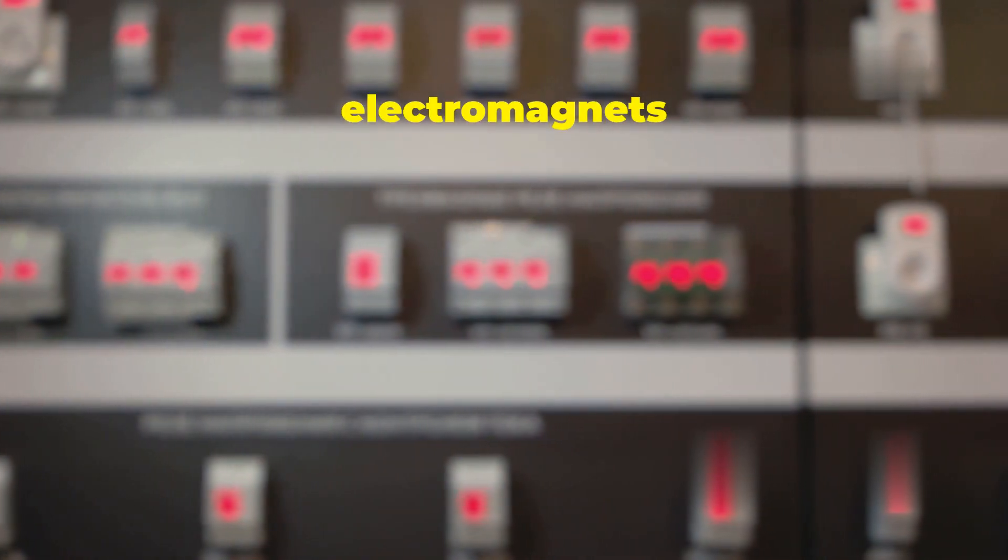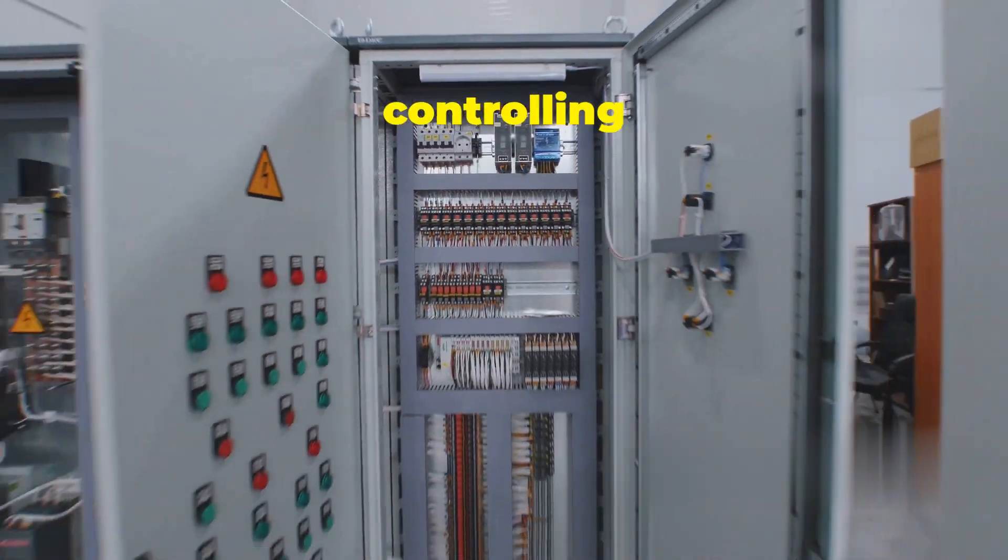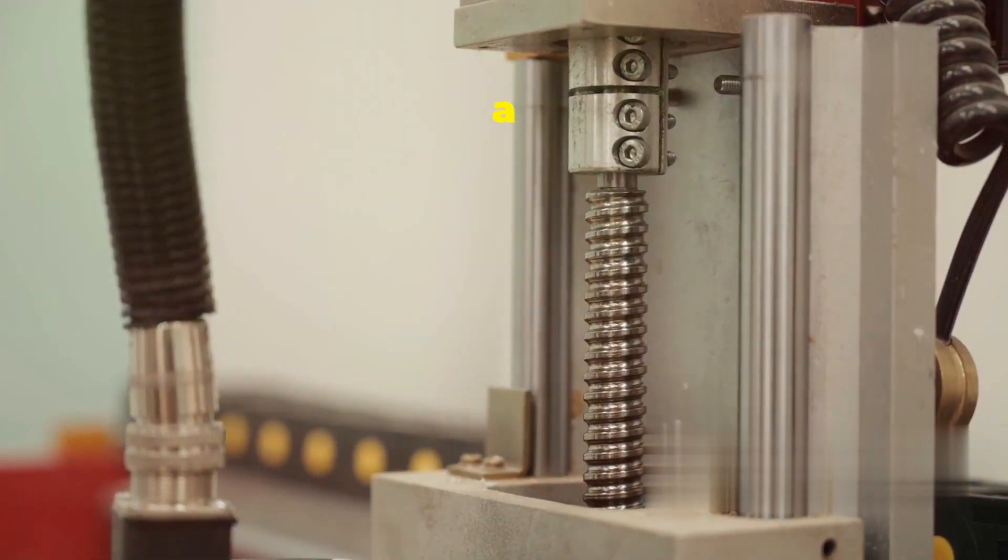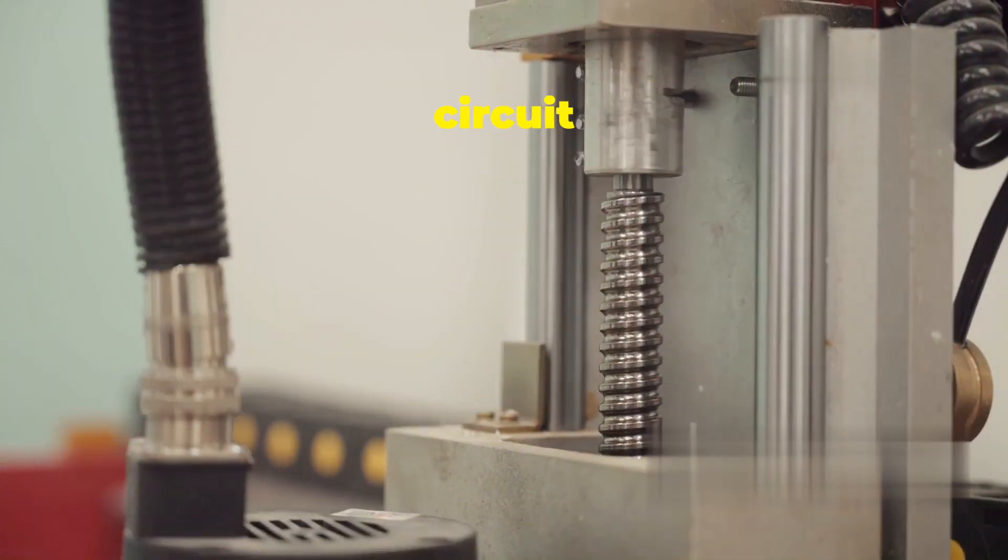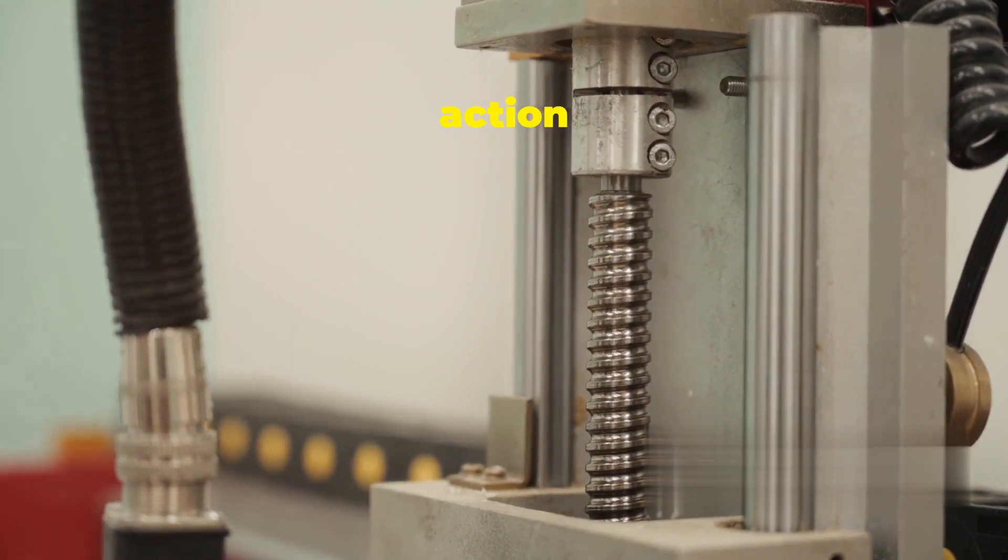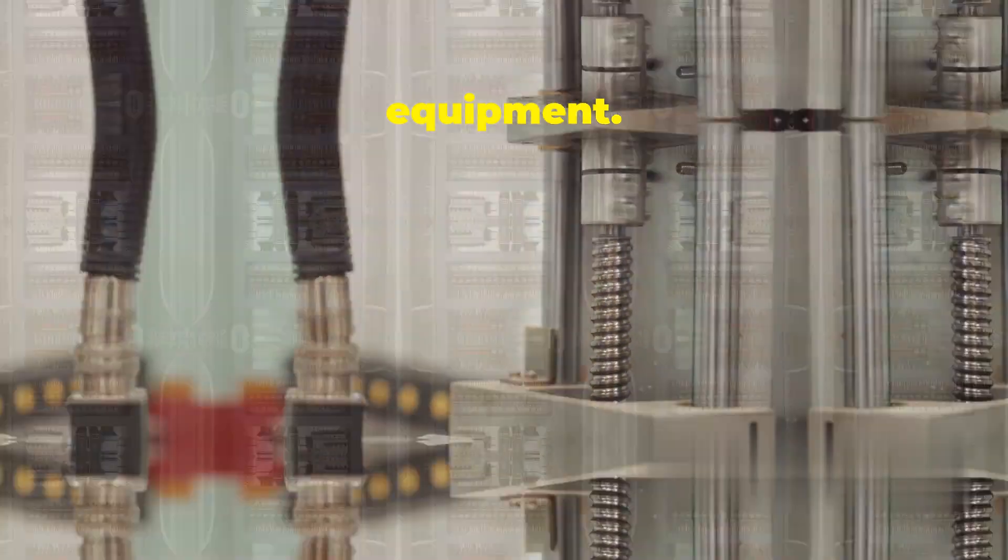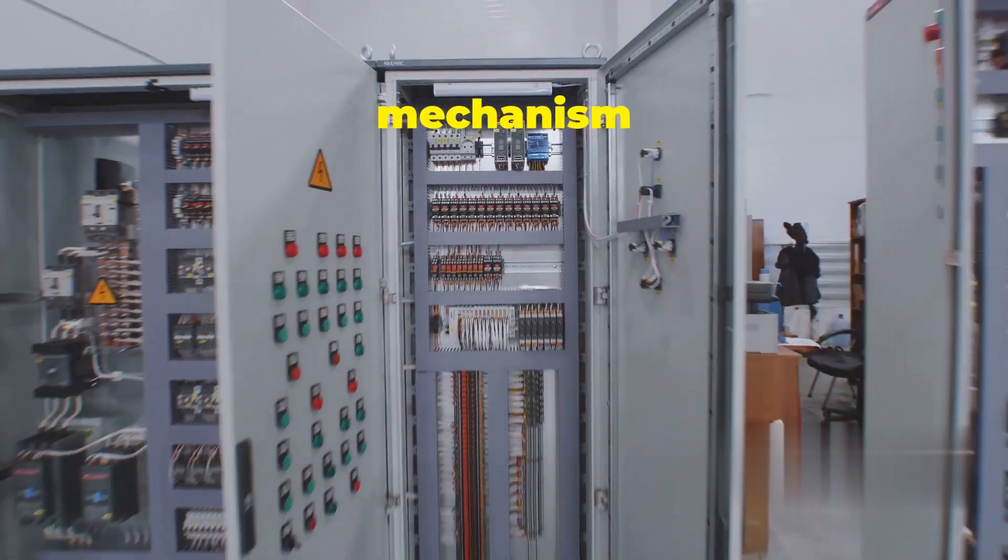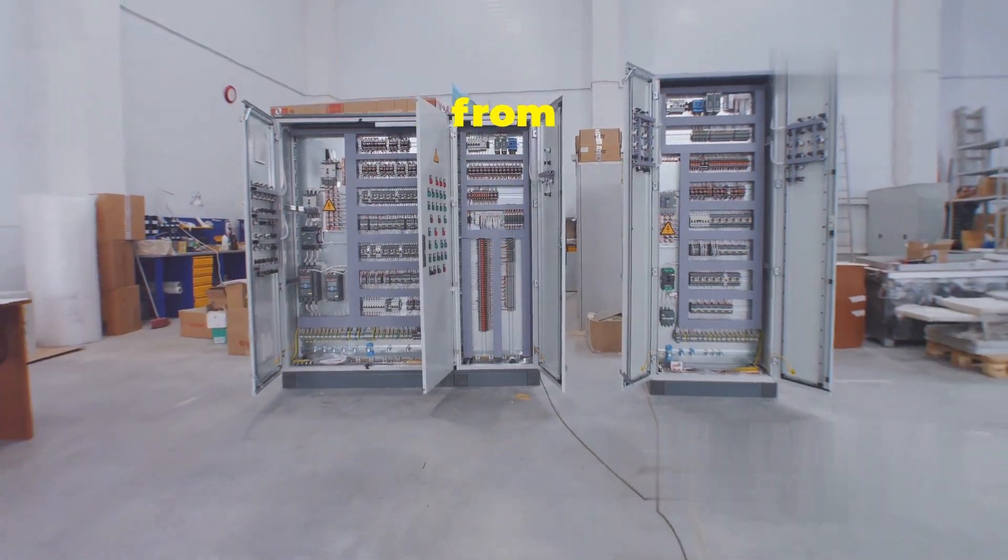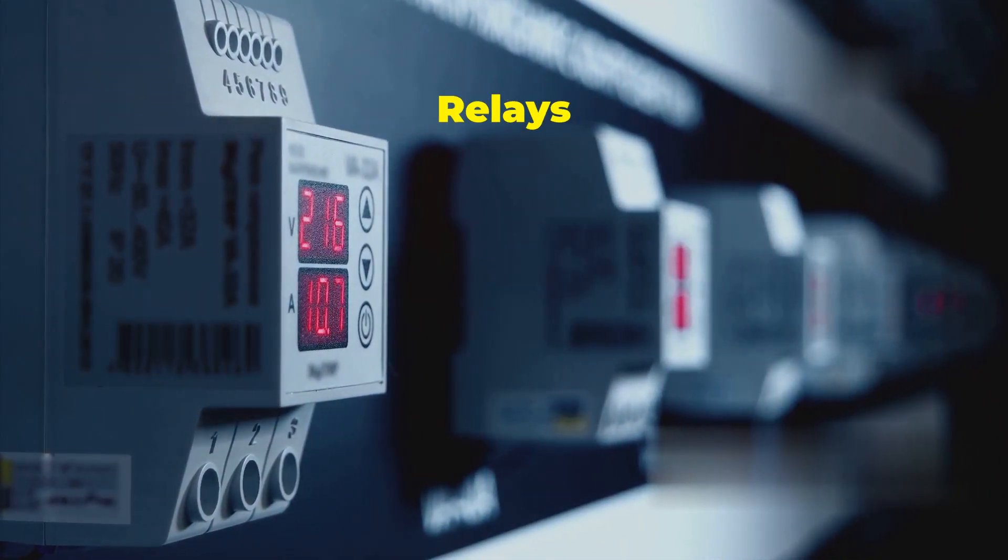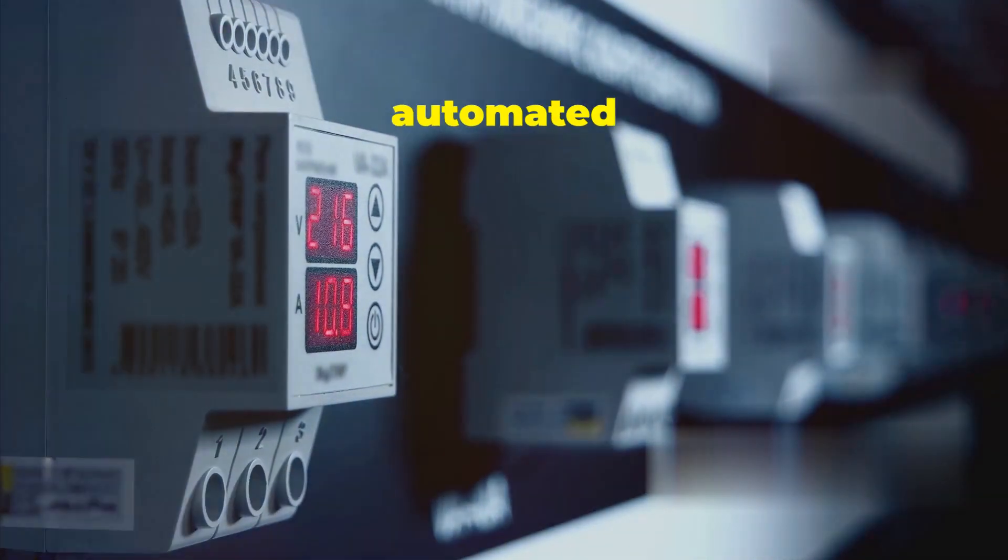Relays: relays are like electrically controlled switches that use electromagnets to open or close electrical circuits. They are crucial in automating and controlling electrical systems. When the electromagnet is energized, it attracts a metal arm, closing the circuit and allowing current to flow. This action can control anything from small electronic devices to large industrial equipment. This simple yet effective mechanism is used in various applications, from controlling high-power devices to switching signals and telecommunications. Relays are fundamental to the operation of many automated systems.